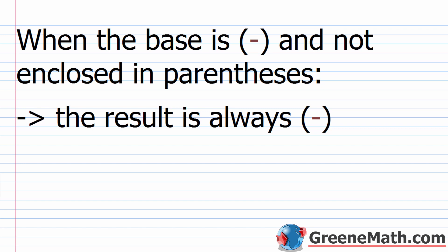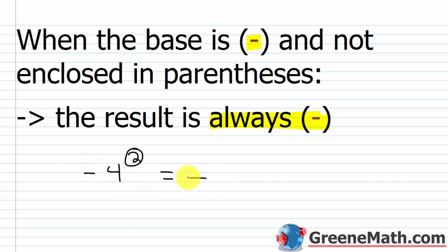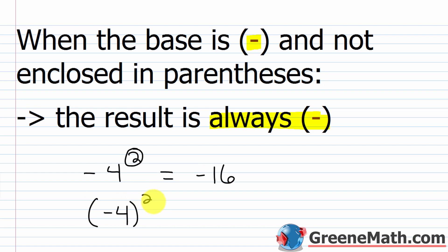For example, negative 4 squared without parentheses is always negative — it's just the opposite of 4 squared. Since 4 squared is 16, the answer is negative 16. But if you write negative 4 squared with parentheses around the negative 4, now you look at the exponent: 2 is even, so you get a positive result. Negative 4 times negative 4 gives two negative factors — a positive result — so the answer is positive 16.